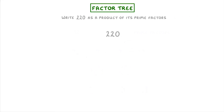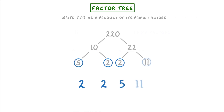One thing to clarify here is that it doesn't actually matter which way you factorise it — you'll always end up with the same prime factors. For example, we could have split 220 into 10 and 22, then split the 22 into 2 and 11. We'd still have ended up with 2, 2, 5, and 11 as our prime factors. So don't worry about which way you factorise it. As long as each time you're making a correct factor pair, then you'll end up with the same answer at the end.